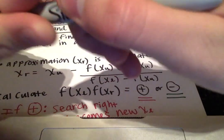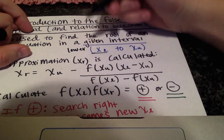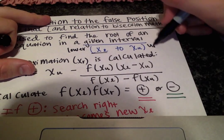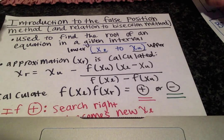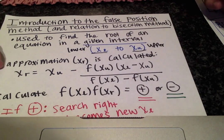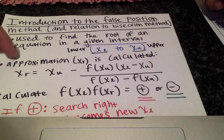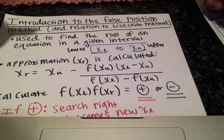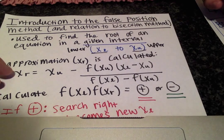That is the lower limit and this is the upper limit. And for the false position method you also have to calculate your x_r value which is your approximation, and this one is a little more lengthy compared to the bisection method.